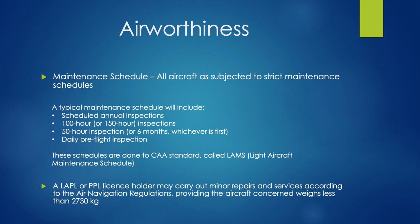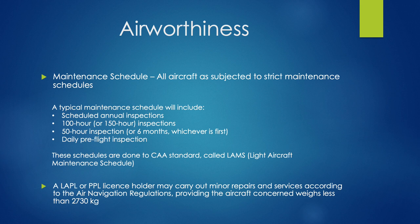All aircraft, no matter their purpose, are subjected to a strict maintenance schedule. A typical schedule includes an annual inspection every calendar year, a 100-hour inspection — or possibly 150-hour, though 100 is more common — a 50-hour inspection or six-monthly inspection, whichever comes first, and a daily pre-flight inspection to check the condition of the aircraft. Aircraft are subjected to a lot of maintenance to pick up any defects quickly before they progress into something more serious. These schedules are set by the CAA, who make recommendations of when and how often an aircraft should be maintained.